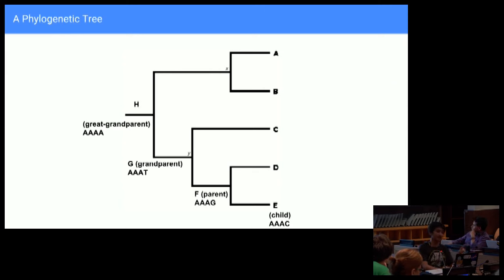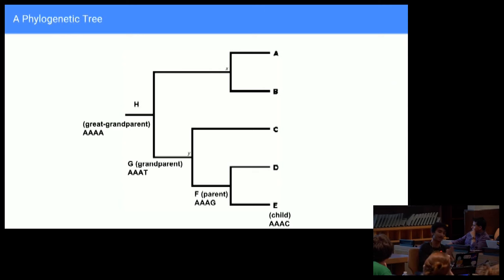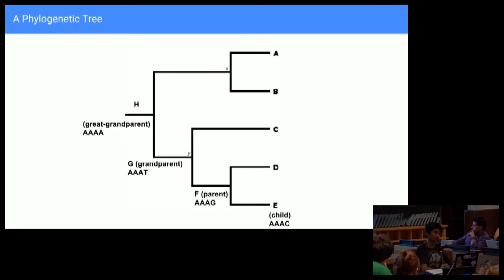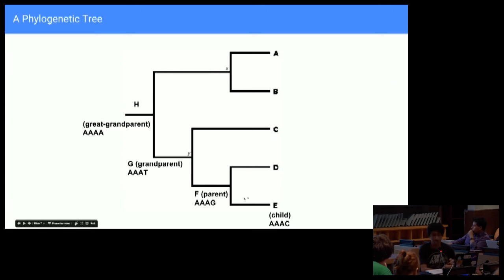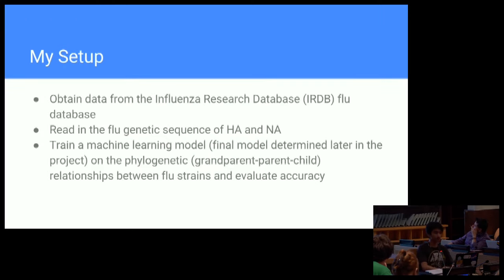Right there on the bottom, you have E, which is the child of F. What I would do is ask: how has the genetic sequence of E changed from F, and how has the genetic sequence of F changed from G? If I could train a machine learning model to analyze these relationships as the flu changes generation by generation, then maybe I could predict a child of E — would it be AACC, would it be AATC? So I wanted to figure that out.